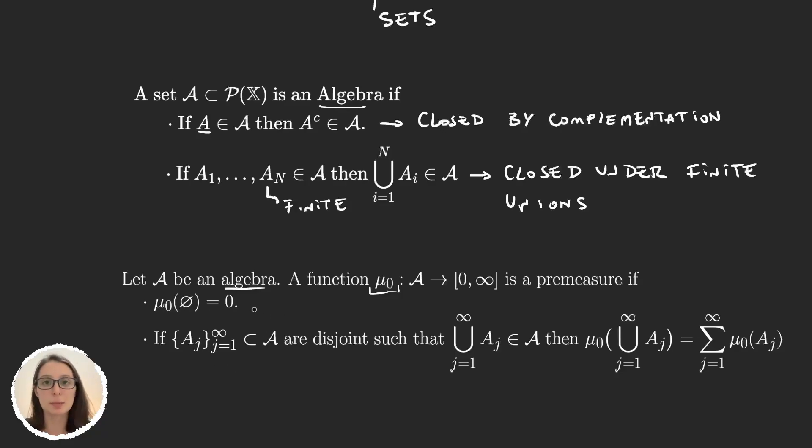And the second one is a bit complicated, but don't be scared. It says the following. You have a countable sequence of elements in the algebra. So this is more than finite, this is countable. So we don't know if the union is in the algebra, because we know that whenever we grab a finite amount of elements in the algebra, the union is in the algebra. For a countable union, we don't know. If it's finite, then yes. But if it's not finite, then it could not be in the σ-algebra.